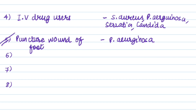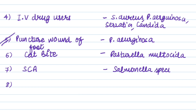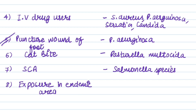This is an important exam question. For cat bites, the causative organism is Pasteurella multocida. For sickle cell anemia — also an important exam question — Salmonella species are the causative organisms of osteomyelitis. For exposed shore in endemic areas, causative organisms are Histoplasma and Coccidioides immitis.